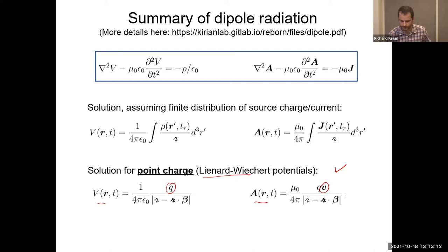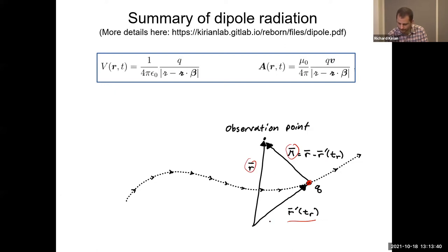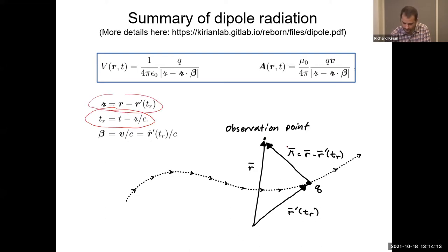If you have a charge moving at velocity v, we can write down the potentials. Here's a schematic: we have a charge on some trajectory, moving and accelerating, at position r′ at a particular time. The script r is the difference between our observation point r and the location of the charge. One tricky part is that we have to use the retarded time, because it takes time for information about changed fields to reach the observation point — and information in vacuum travels at the speed of light.